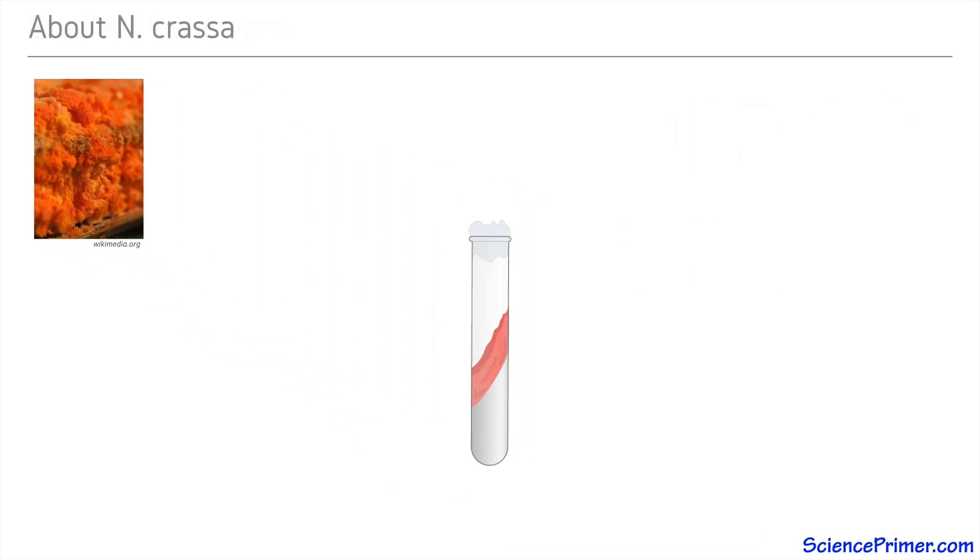Neurospora crassa is a microorganism that is easily cultured in test tubes, allowing scientists to grow many individual strains in a relatively small space. Its nutrient requirements are known. It is able to grow in minimal media containing a mixture of salts, sucrose as the sole carbon source, and the B vitamin biotin. In other words, it has a complete set of enzymes required to synthesize all of the complex molecules it needs to grow.